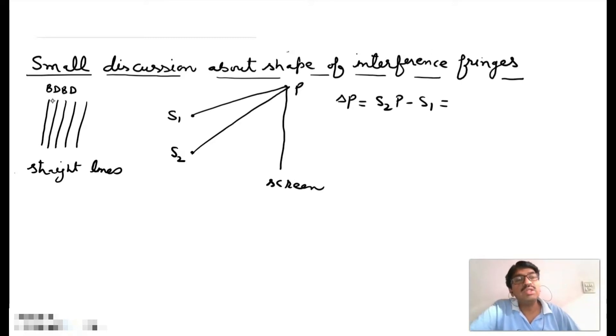And for maximum intensity at point P it becomes equal to n lambda.